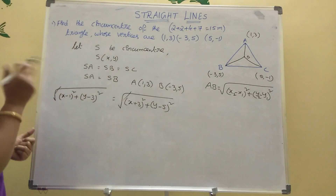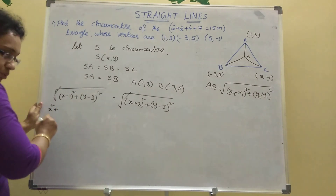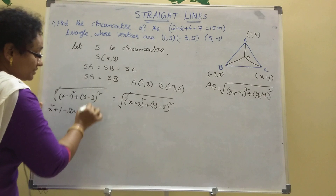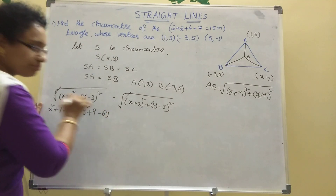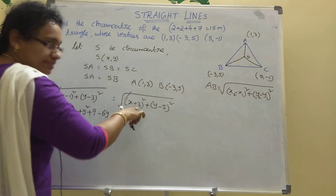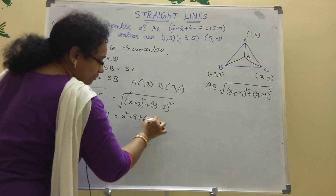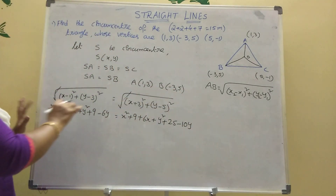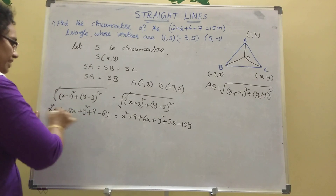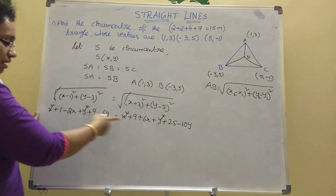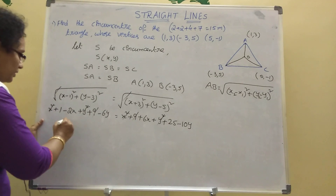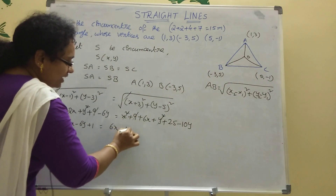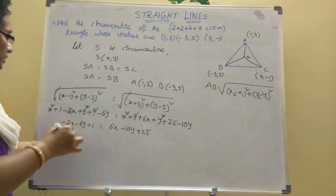Expanding: x² - 2x + 1 + y² - 6y + 9 equals x² + 6x + 9 + y² - 10y + 25. Cancelling x², y², and 9 from both sides, we get: -2x - 6y + 1 = 6x - 10y + 25.